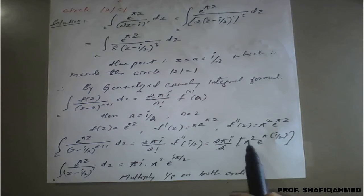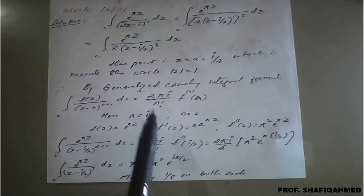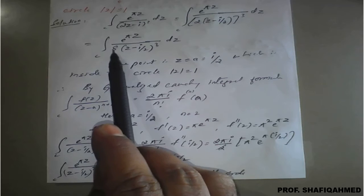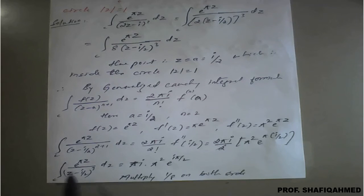On simplification, 2 and 2 get cancelled, pi i left, pi square into e raised to i times pi upon 2. But the question has 1 upon 8 missing here, so multiply 1 upon 8 on both sides.